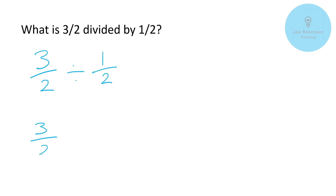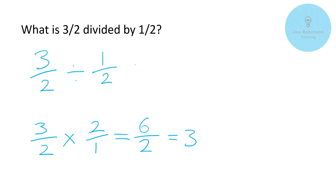So we've got three over two. We turn the second fraction upside down, giving us two over one. Then we multiply: three times two gives us six on top, and two times one gives us two on the bottom. Six over two gives us three. So the answer to three over two divided by one over two is three.